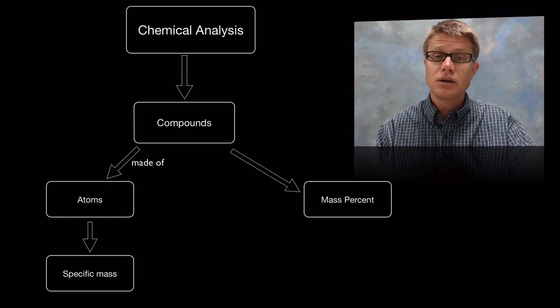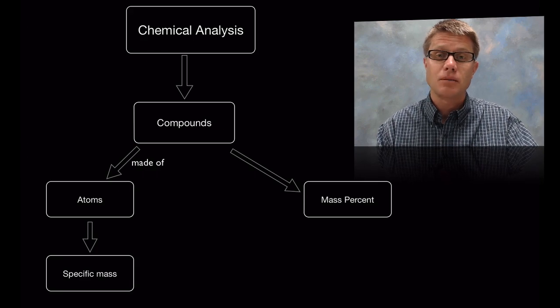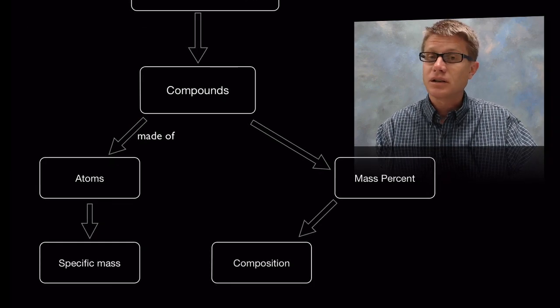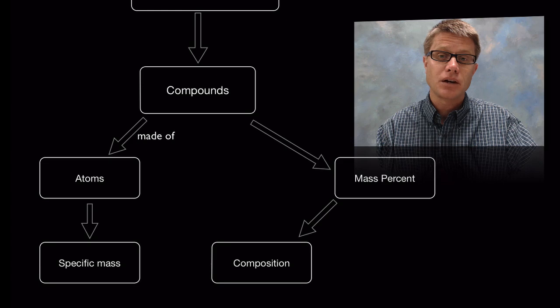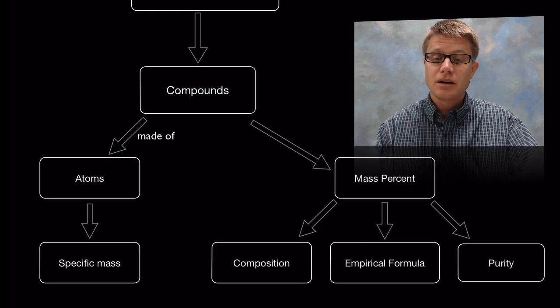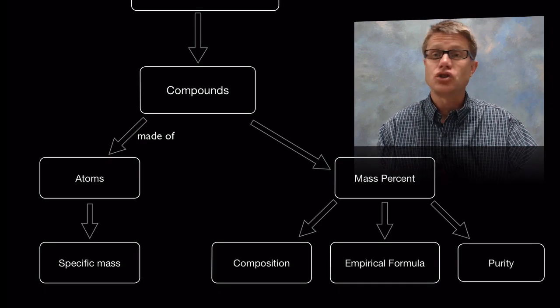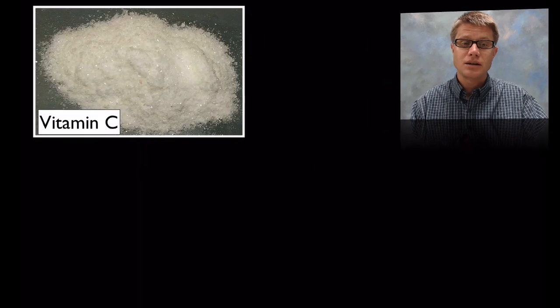And so what we can do is look at the percent mass. In other words how much of that mass of that compound is made up by each of those different atoms. And that tells us what the composition is. It also can help us figure out the empirical formula, that's that simplest chemical formula. And it also can be used to test the purity of a substance.